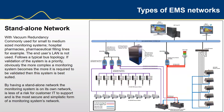So, types of EMS networks. A standalone system would have vacuum redundancy and is commonly used for small to medium sized monitoring systems. This system can also be further enhanced with particle counters with internal vacuum, having a spare sensor as a backup. The end user's LAN is not used — it's a standalone connection. By having a standalone network, the monitoring system is on its own network, is less of a risk for customer IT to support, and is more secure in a simplistic form. However, you do have some trade-offs in terms of client management and remote access.